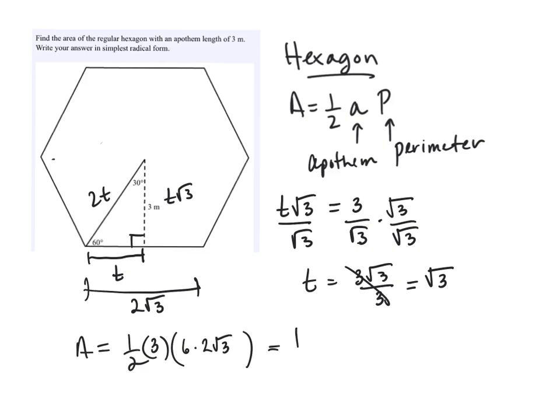So this is 1/2 of 36√3, 3 times 6 times 2. So that would be 18√3, and we always label meters squared.